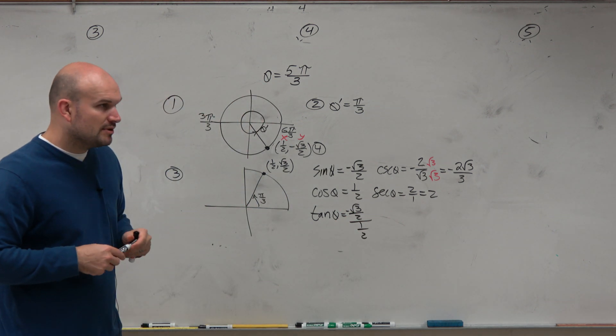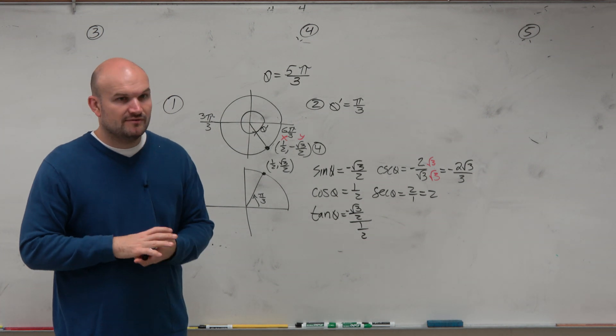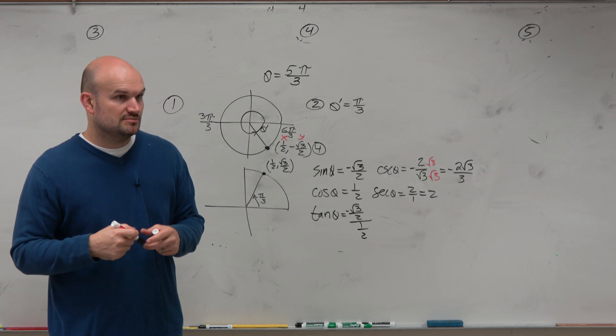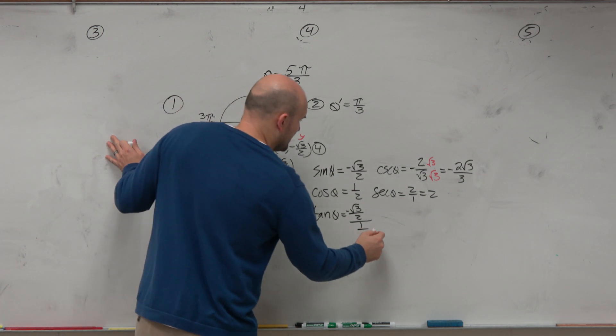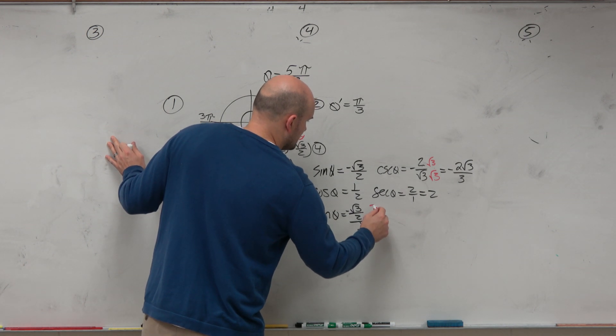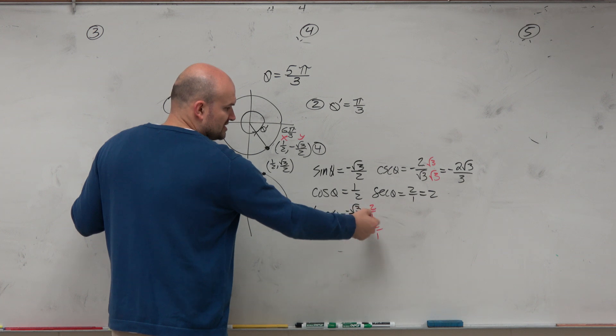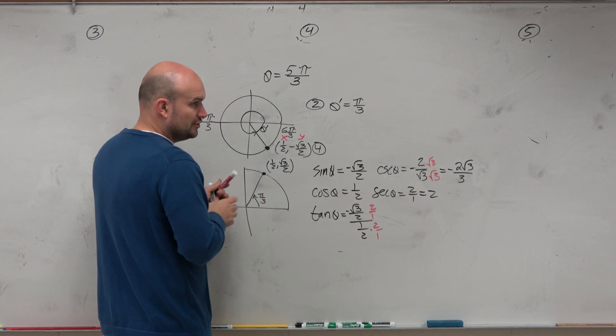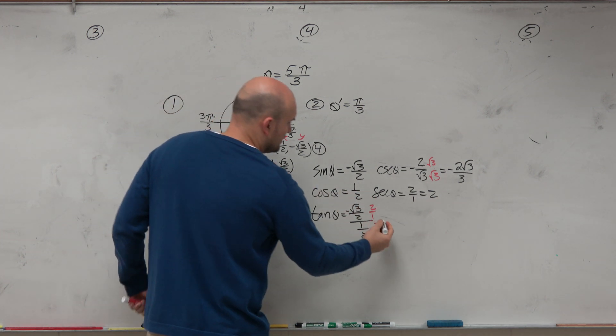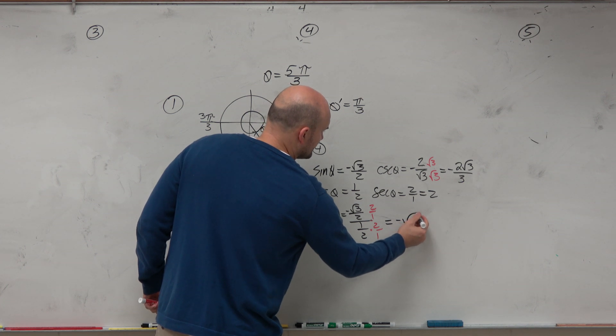So do you guys remember what we do when we have a fraction divided by a fraction? We could just multiply by the reciprocal. On the top and the bottom. Here, this goes to 1, so we're just dealing with the numerator. You can see in the numerator, the 2's would divide out, and you're just left with the negative square root of 3.